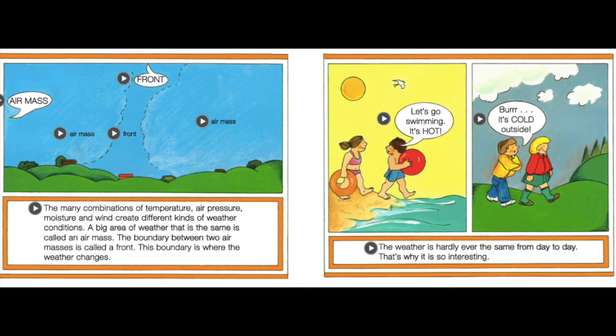The many combinations of temperature, air pressure, moisture, and wind create different kinds of weather conditions. A big area of weather that is the same is called an air mass. The boundary between two air masses is called a front — that is where the weather changes. The weather is hardly ever the same from day to day. That's why it is so interesting.